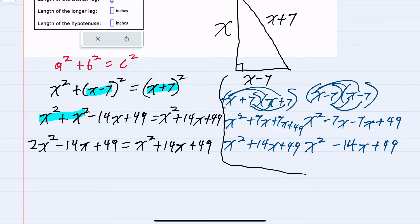To solve whenever I have a quadratic I want to set one side equal to zero. And so here I can move everything from the right hand side over to the left hand side. So I would subtract x squared from both sides, I would subtract 14x from both sides and I would subtract 49 from both sides.